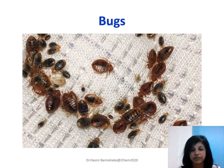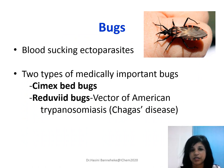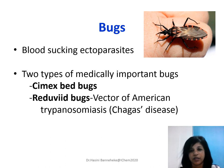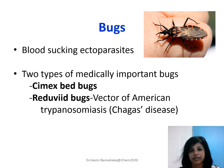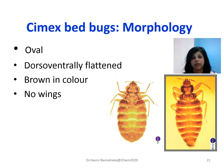Now we are moving on to bugs. There are certain bugs considered blood-sucking parasites because most bugs suck blood. Of the medically important bugs, there are two types: the Cimex, the bed bug that we all know, and the reduviid bug. The reduviid bug transmits American Trypanosomiasis, also called Chagas disease. Luckily, in Sri Lanka we don't have this disease, so we are going to talk only about the Cimex bed bug.